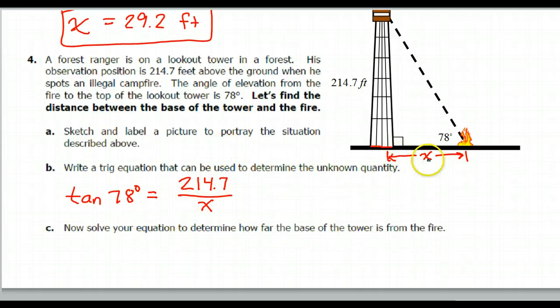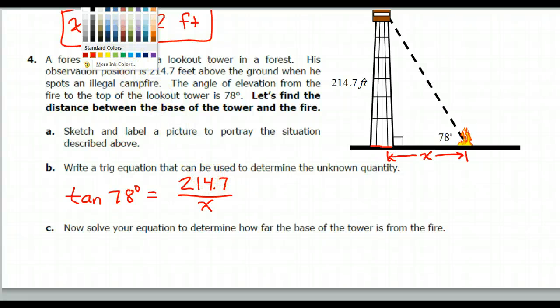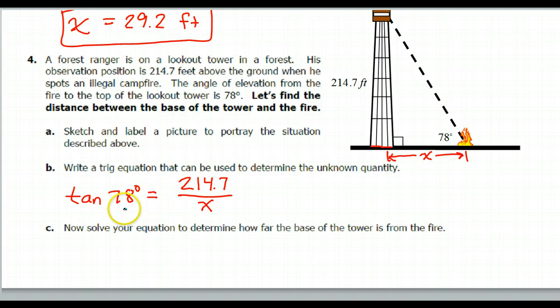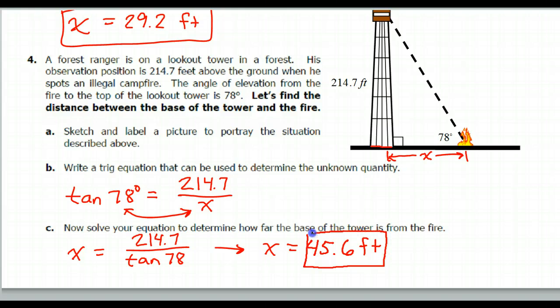Finally, we're supposed to solve this to find the distance to the fire. The unknown is in the denominator, so we will do the reversal. So that is going to give us that x equals 214.7 over tangent 78. Calculator time and it is 45.6 feet. And that is the end of the lesson.